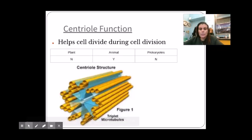Up next is our centrioles. And our centrioles we're going to learn a lot about when we talk about cell division. Their main function is to help cells divide during the process of cell division. And plants and animals divide a little bit differently. So we do not find centrioles in plants. So that's a no, a yes in animals, and a no in prokaryotic cells.